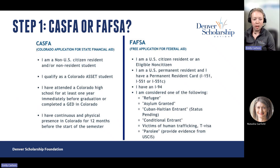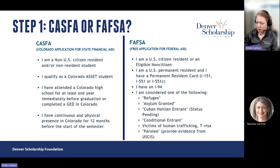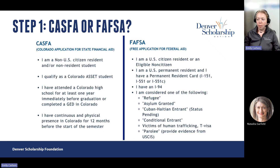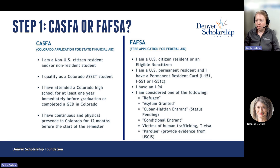The first step in completing financial aid is determining which application to use. We have a graphic that we often use with students, available in the financial aid binder with a link at the end of the presentation. Essentially, we just need to figure out: is the student eligible for federal aid? A lot of our students will be eligible for federal aid — money coming from the federal government — and so they can fill out the FAFSA, the Free Application for Federal Aid. In order to be eligible, students need to be U.S. citizens, permanent residents, or eligible non-citizens.